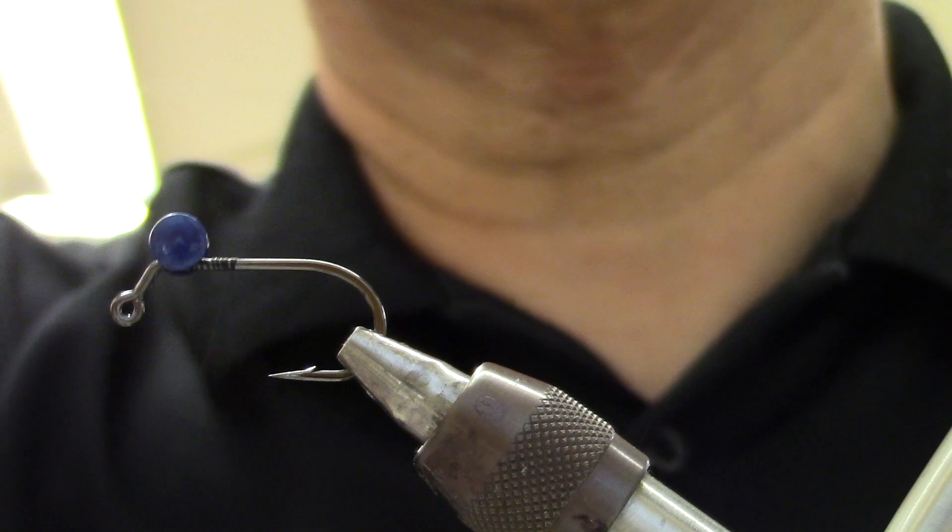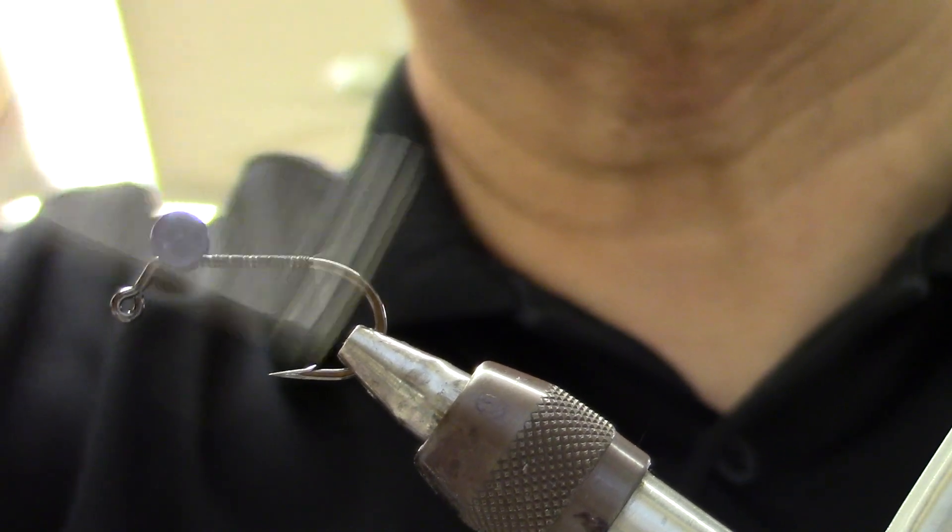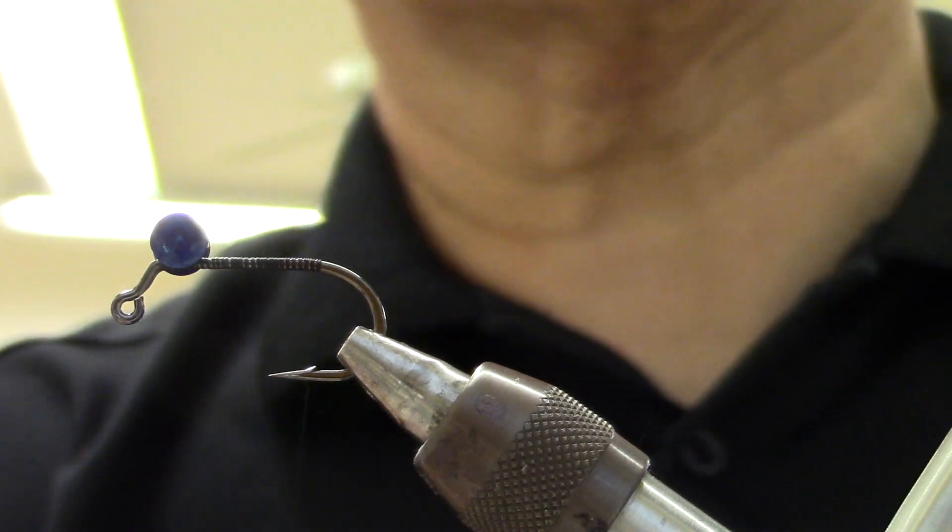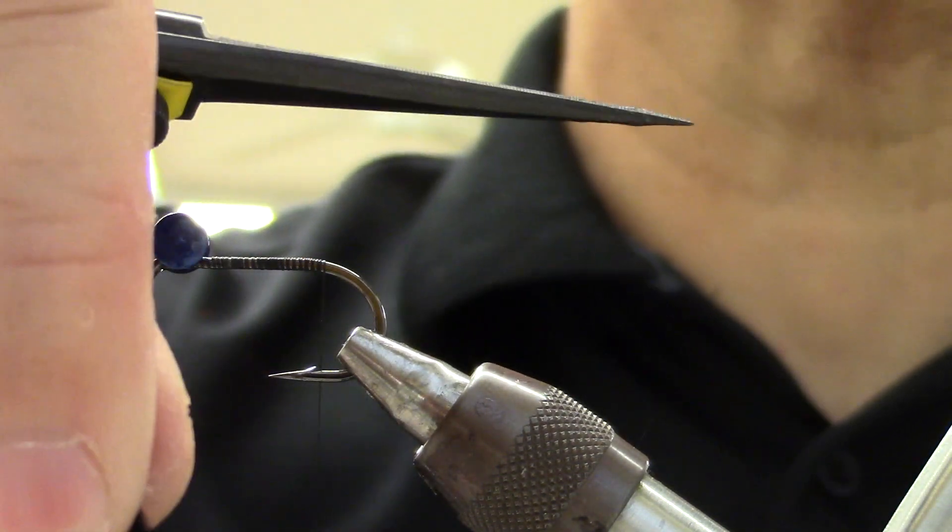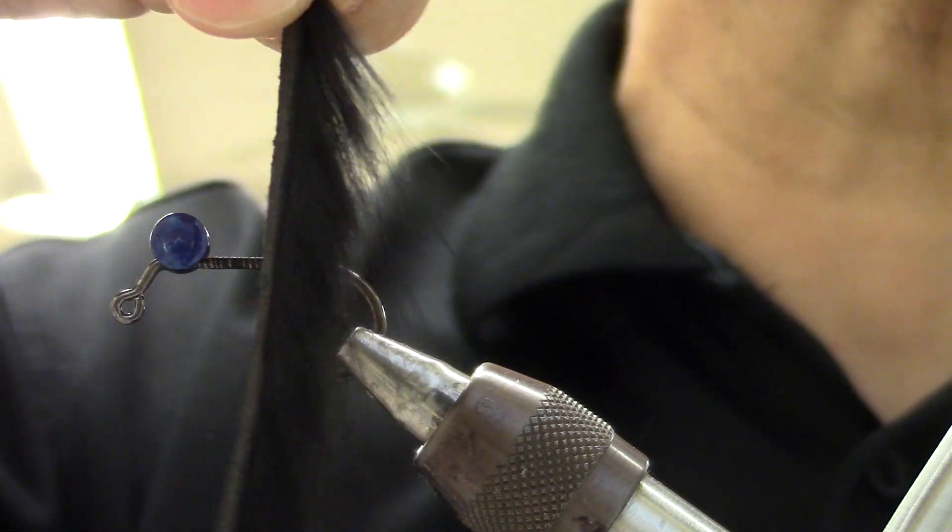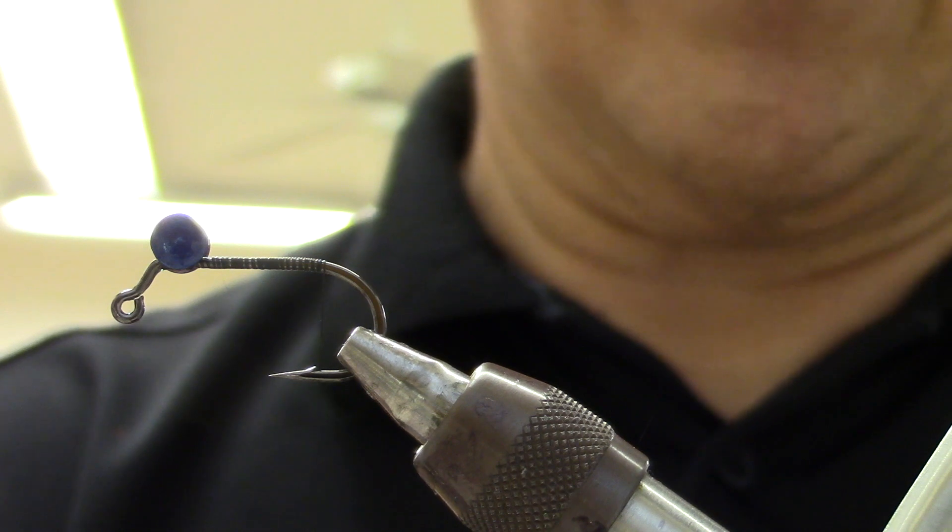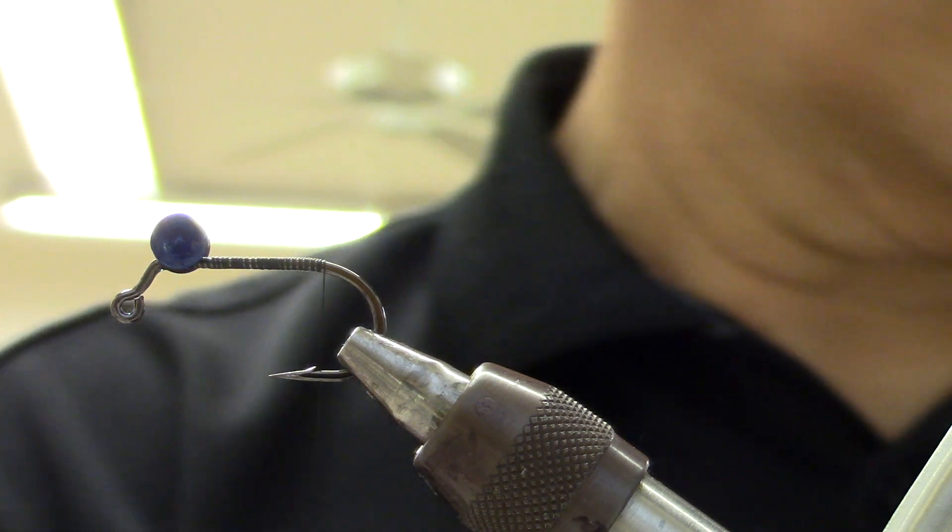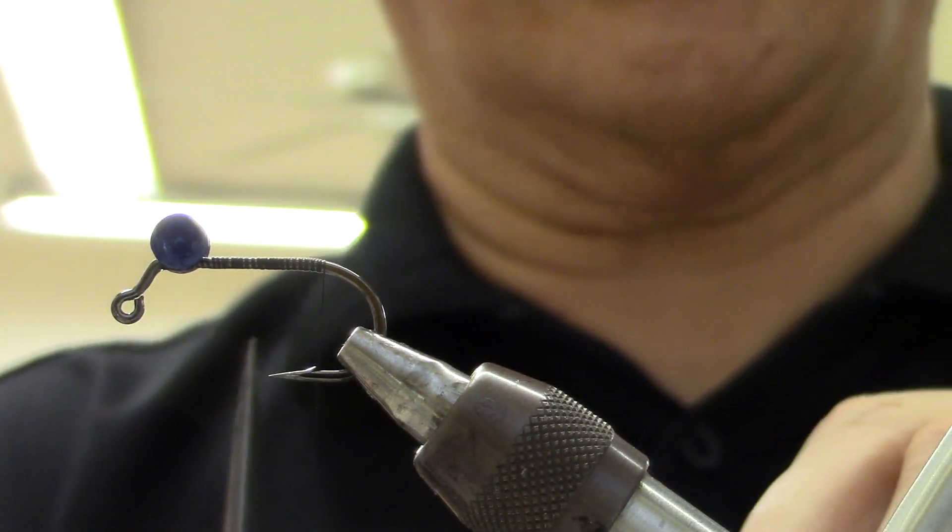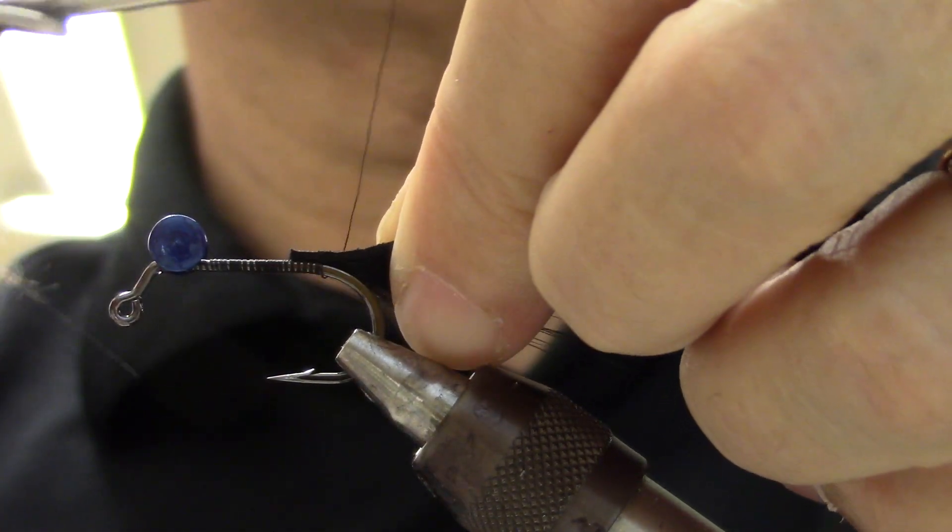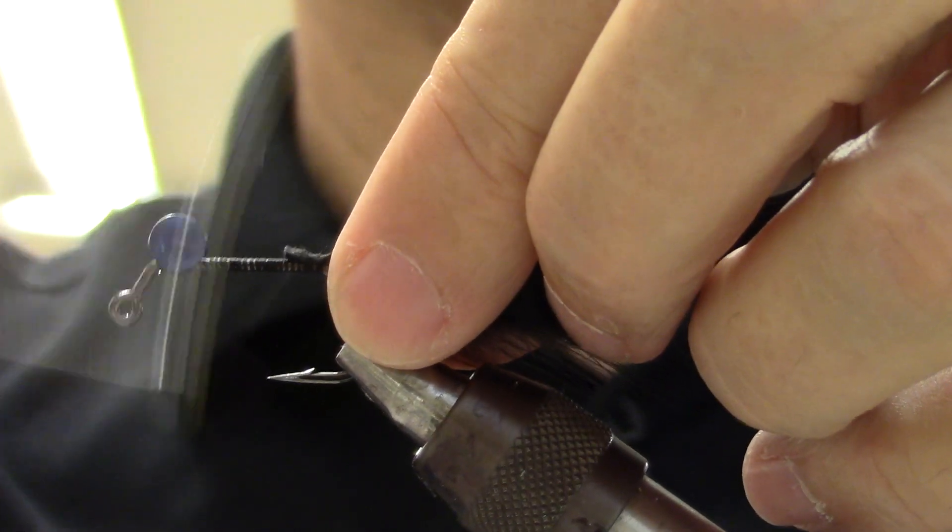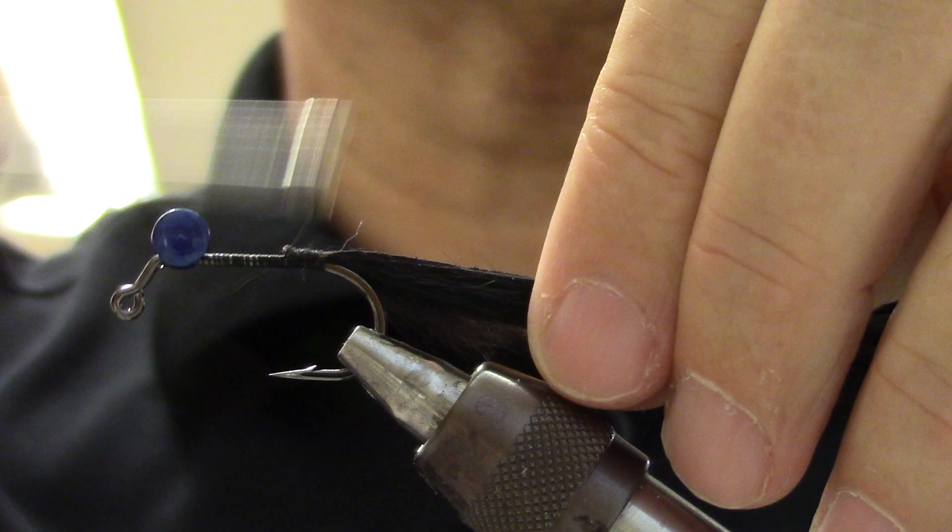So we'll advance our thread to about the barb. That's pretty close. Now, because it's going to be riding upside down, and this is a micro strip, it's not very thick. I'm just going to strip off a little bit on the top. And I'm going to tie it in upside down so the hair is going down. There we go.